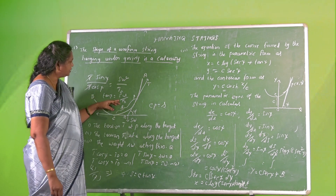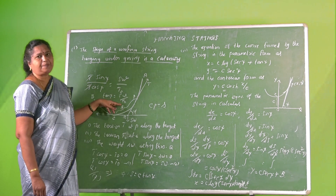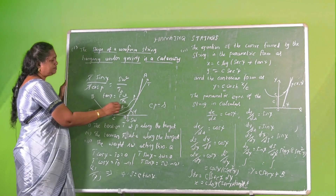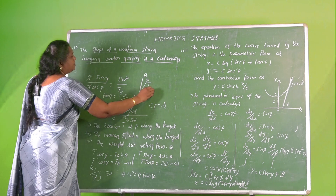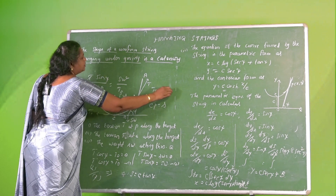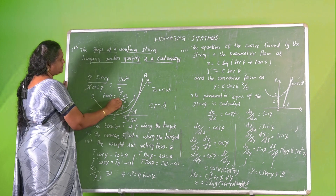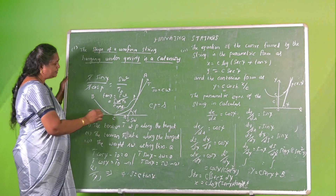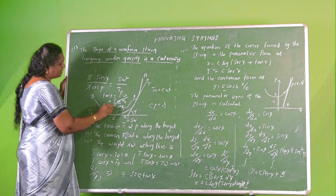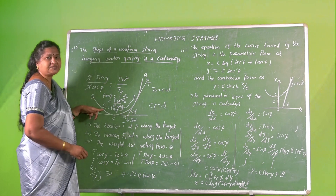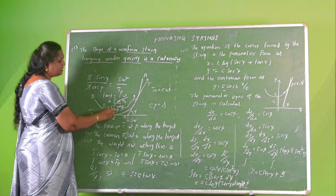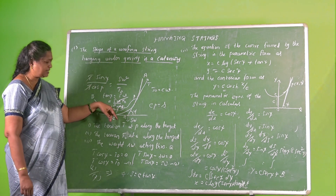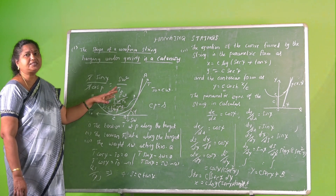Now C is a constant such that T₀ = CW. Substituting, tan ψ = SW / CW, and W cancels, giving S = C tan ψ. This is the intrinsic equation of the catenary, and it shows that the shape of a uniform string hanging under gravity is a catenary.